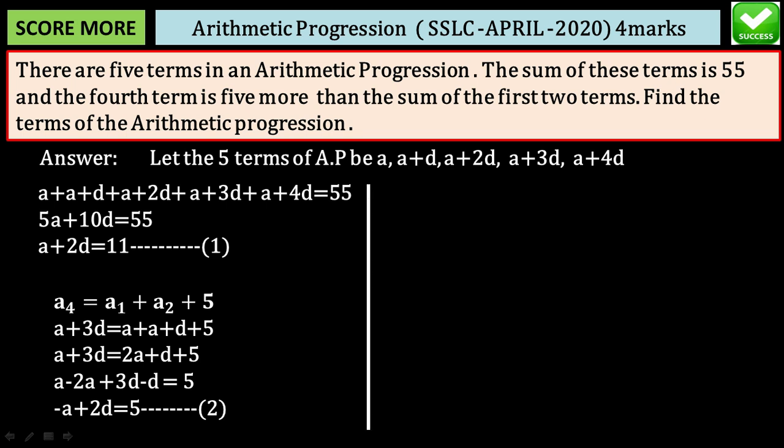Solving these two equations. This is the first equation, this is the second equation. Add them up. A minus a cancel. Then 2d plus 2d equals 4d equals 11 plus 5, which is 16.